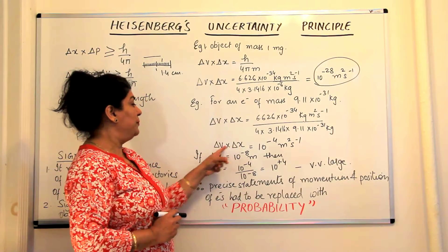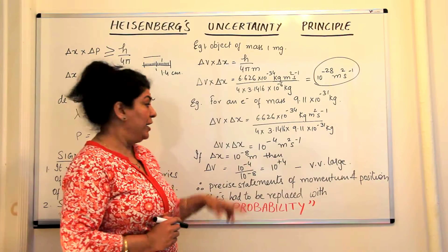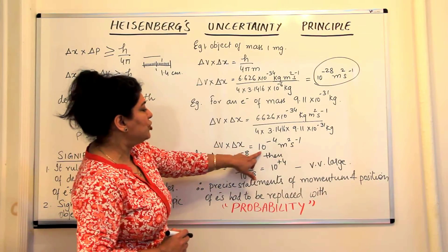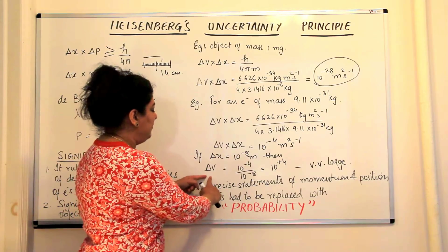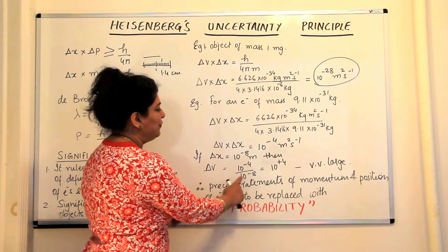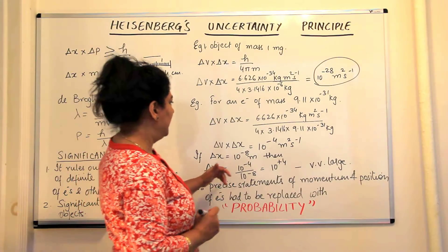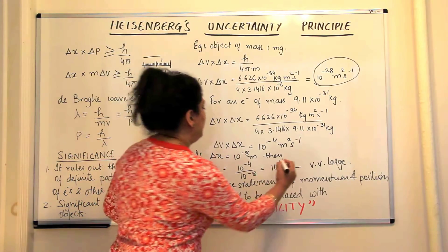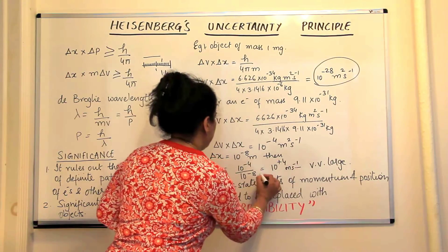We just calculated that the product of delta v and delta x is 10 to the power minus 4. Therefore, delta v would be 10 to the power minus 4 divided by delta x. So delta v equals 10 to the power minus 4 divided by delta x, and this would be in meters per second because this is in meters.